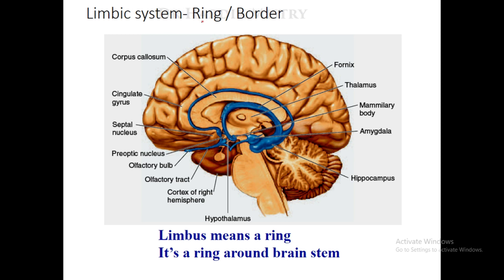The limbic system — 'limbic' means ring or border, 'limbus' means a ring — is a ring around the brain stem.